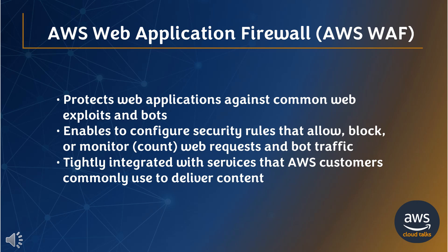AWS Web Application Firewall protects web applications against common web exploits and bots that can affect availability, compromise security, and consume excessive resources. It enables you to configure security rules that allow, block, or monitor web requests and bot traffic based on conditions such as IP addresses, HTTP headers, HTTP body, URI strings, SQL injection, and cross-site scripting.